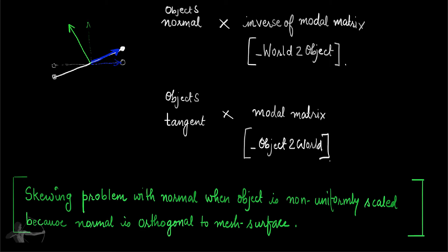This problem doesn't happen with the tangents because they are along the surface, and that is the reason why we will just use the model matrix, not the inverse of model matrix, to transform object space tangent into world space tangent.